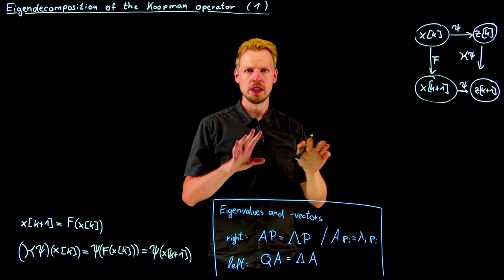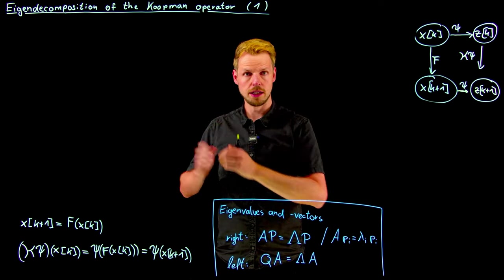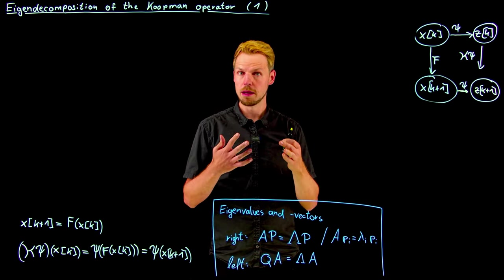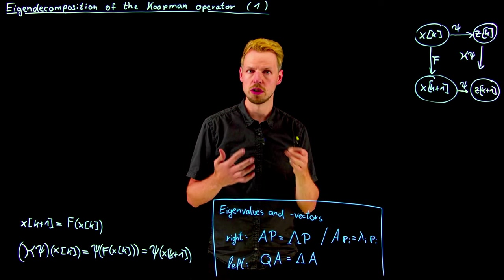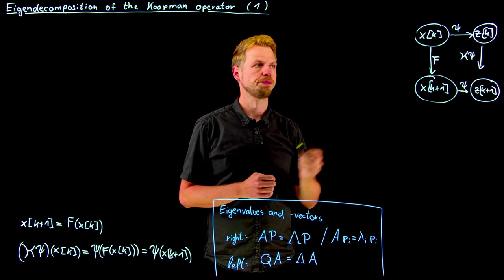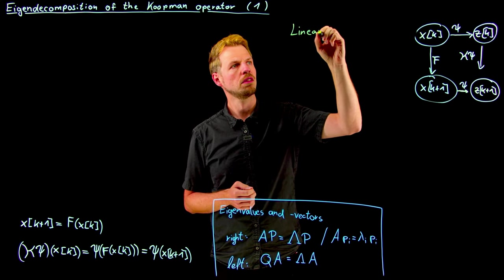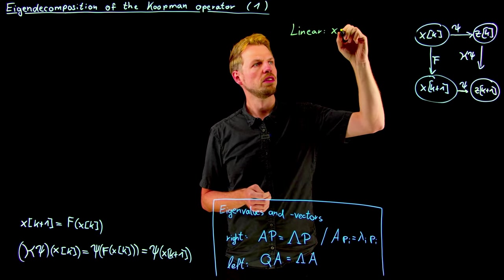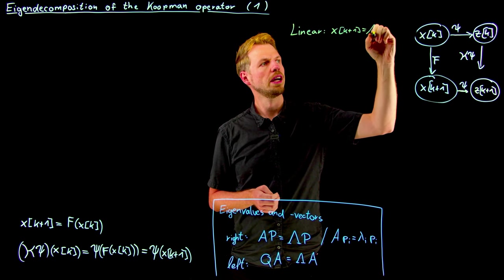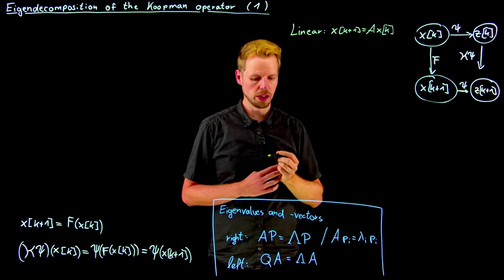Before we dive into the calculation of these eigenfunctions and then later on how to do this numerically, I would like to take a small recap for linear systems and then motivate how to use this for Koopman later on. So if we study linear systems, then we have a system of this type: x_{k+1} = A times x_k, where A is now an n by n matrix.